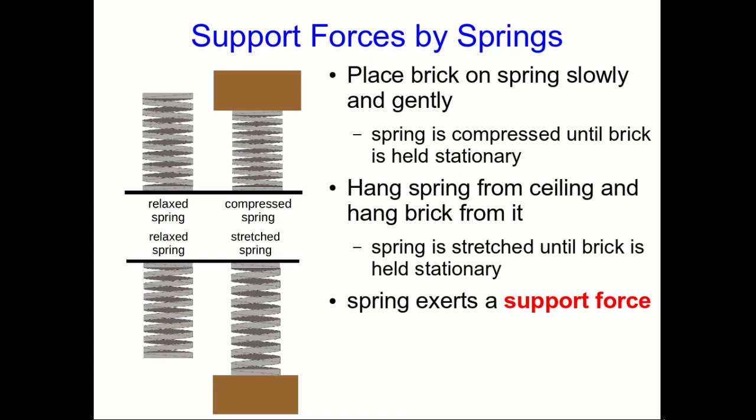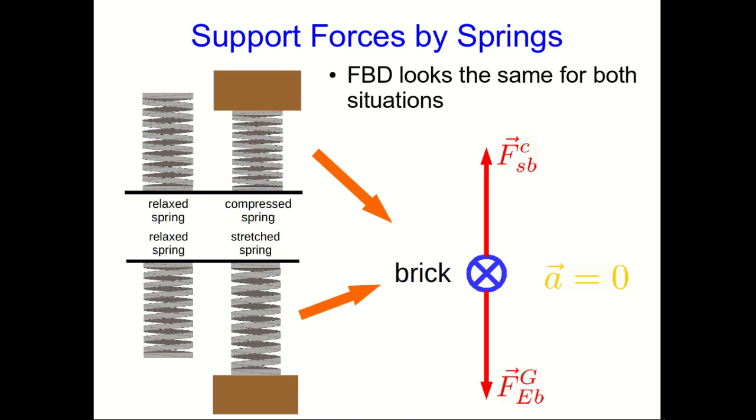Because the spring is supporting the brick in either case, we might call this a support force. And notice that in both cases what we have for the brick is that it has a downward gravitational force due to the earth and an upward contact force due to the spring. And because it's being held stationary, so its acceleration is zero, we know that those two forces are equal in magnitude. But also notice that that means the free body diagram looks exactly the same for both cases.